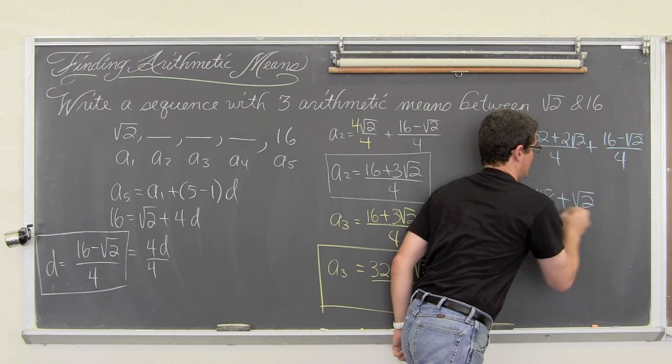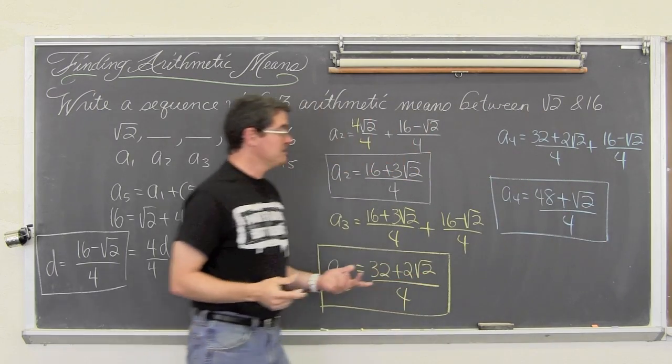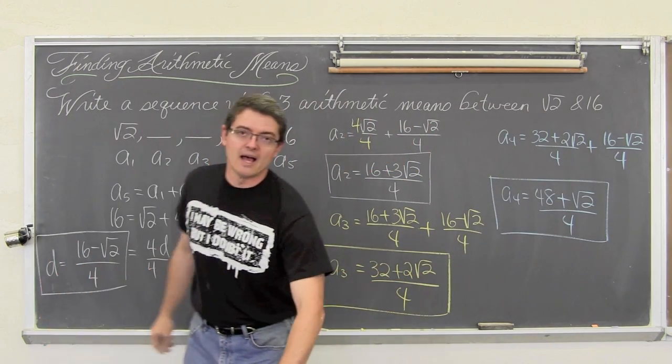2 minus 1 is 1, so plus 1 square root of 2 over 4. And that is our last arithmetic mean. And that is the end of our last example.